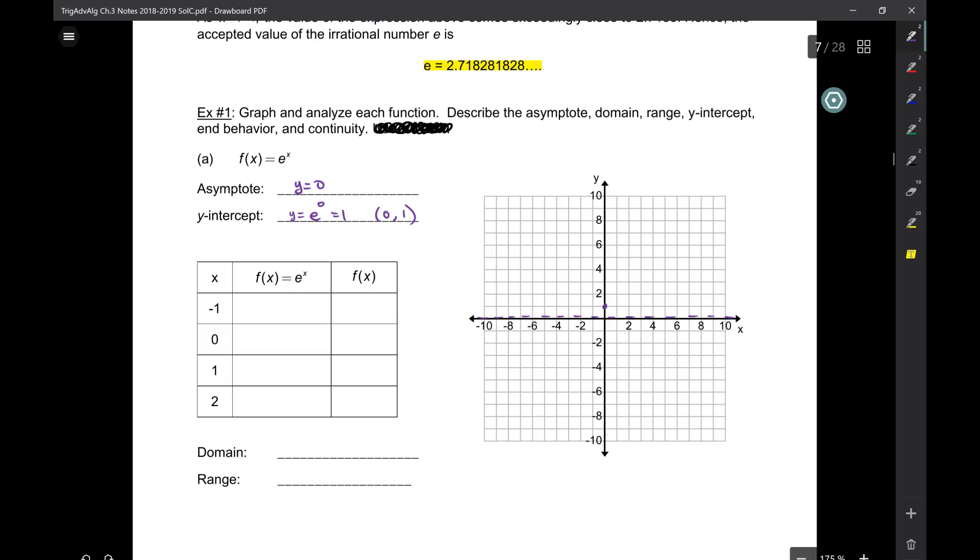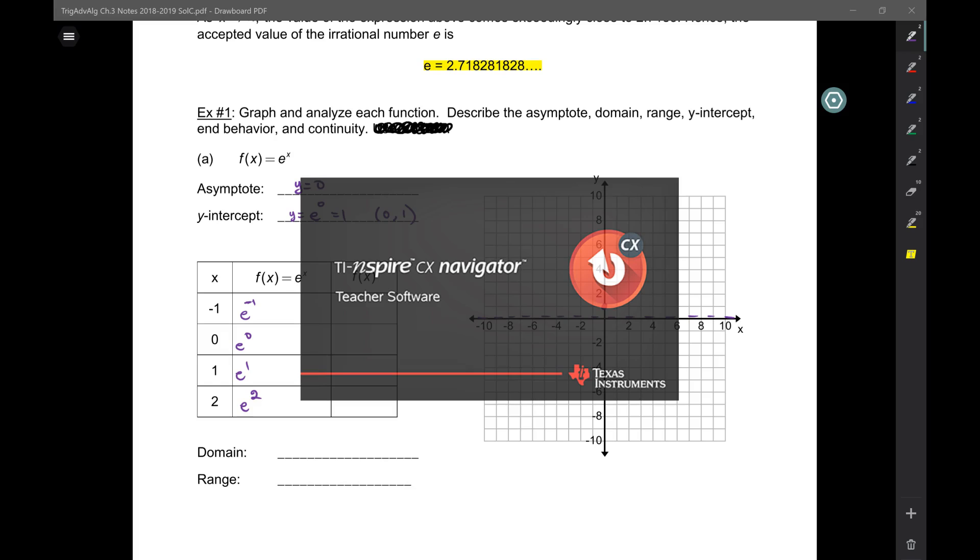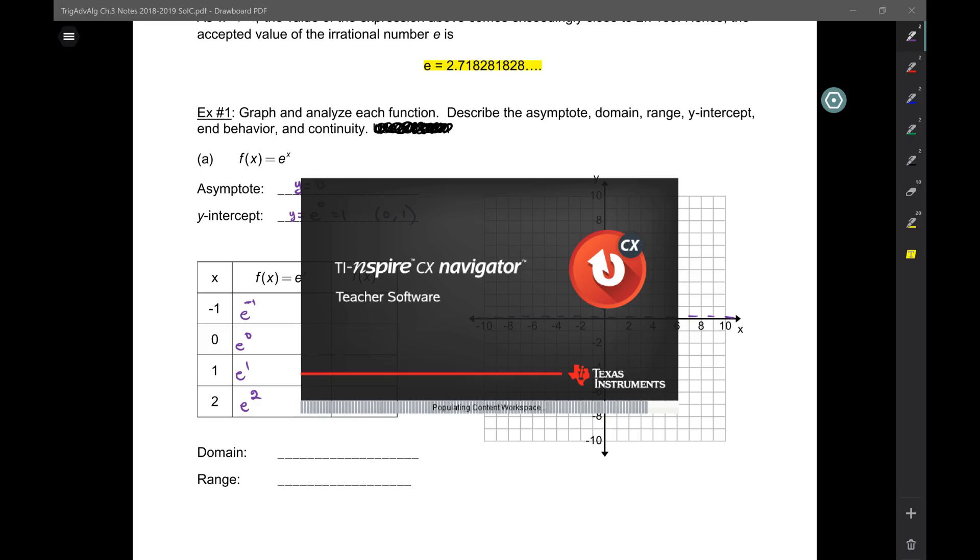When x is zero, y is one. The rest we're going to do it similar to how we did yesterday's functions. So is e to the x growth or decay? Growth, because e is greater than one. So I pick these numbers again. Here I have e to the minus one, e to the zero, e to the one, e squared. Right now take out your calculators, you're going to plug this in. Find that button e. It should be on the left hand column.